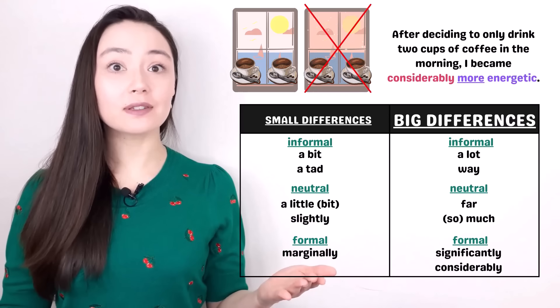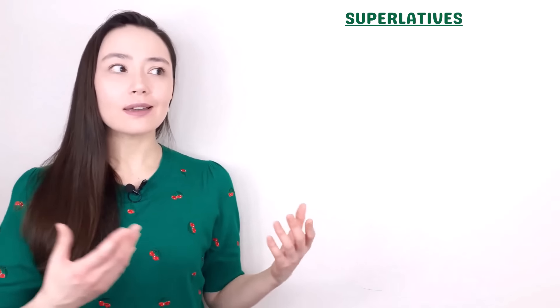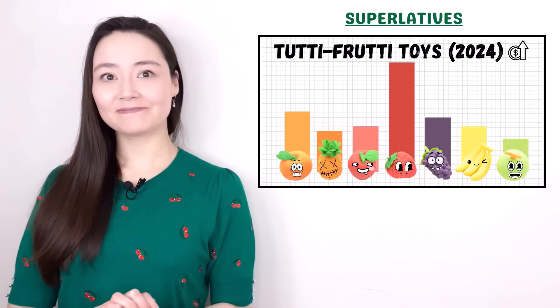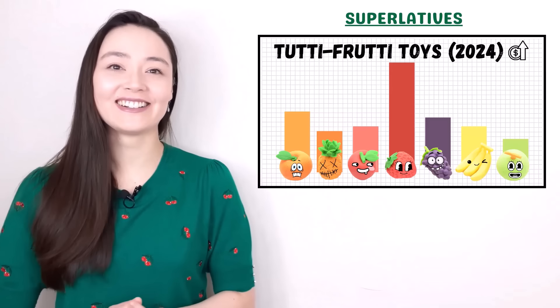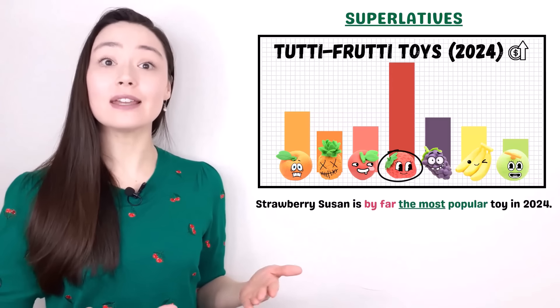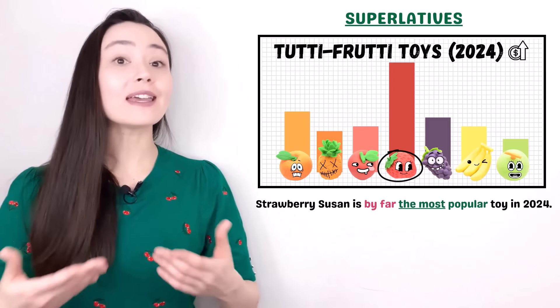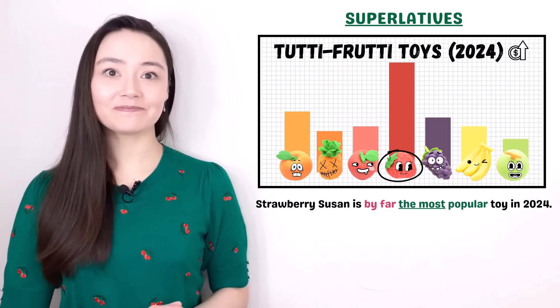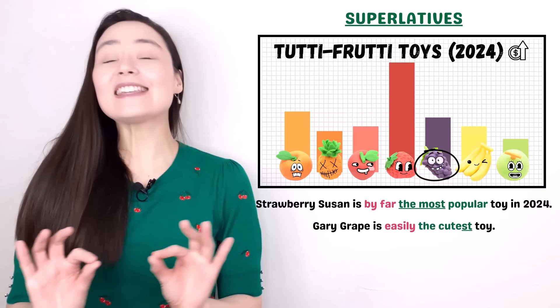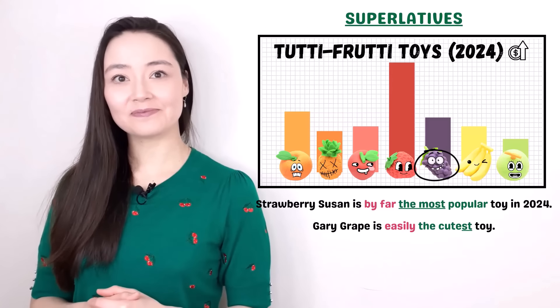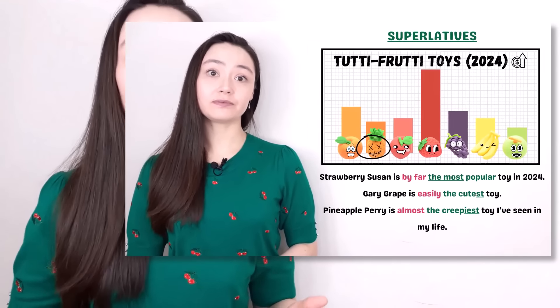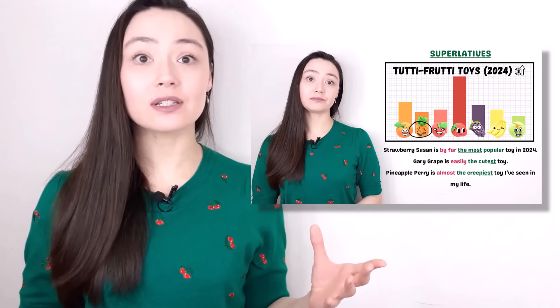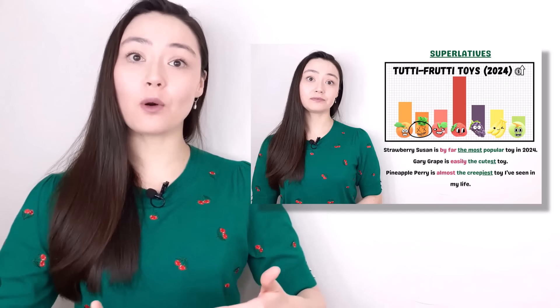We've looked at modifying comparatives, but what about superlatives? Because superlatives are already the most extreme form, is it possible to show a difference? In some ways. Here are the statistics of a toy company — they sell little fruit toys. Strawberry Susan is by far the most popular toy in 2024 — there's a big difference there. Gary Grape is easily the cutest toy here. Perry Pineapple is almost the creepiest toy I've seen in my life. Whether we're speaking about small or big differences, we're still making adjectives more intense when we form comparatives and superlatives.